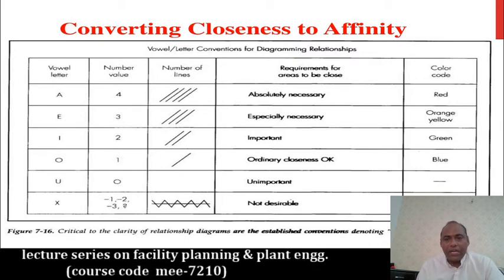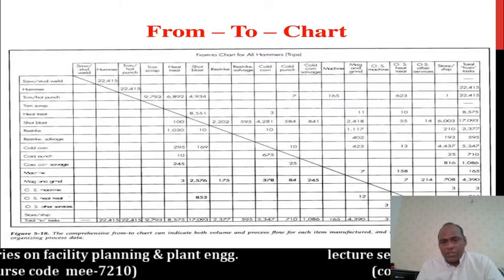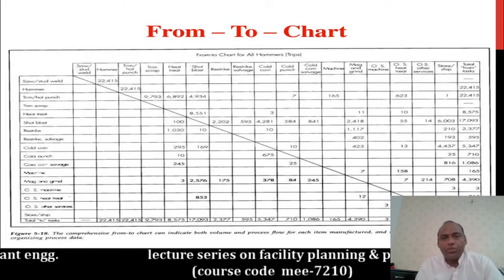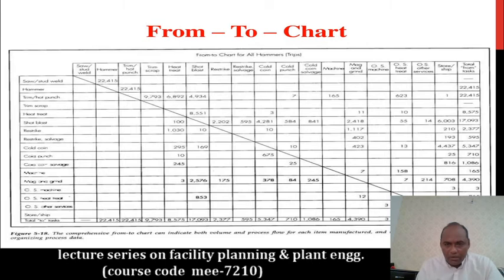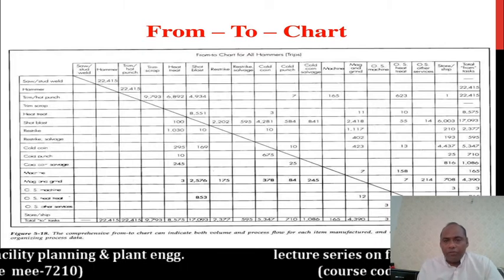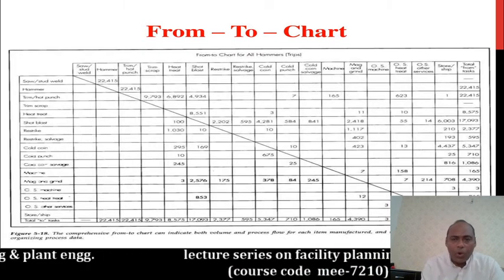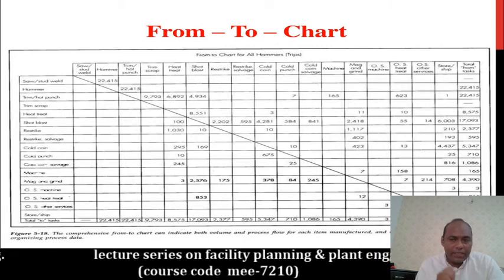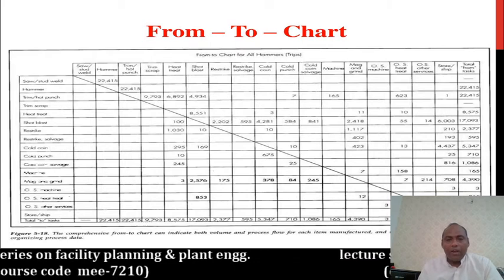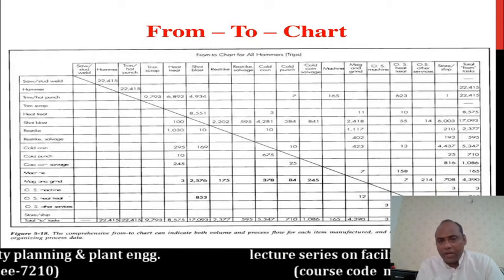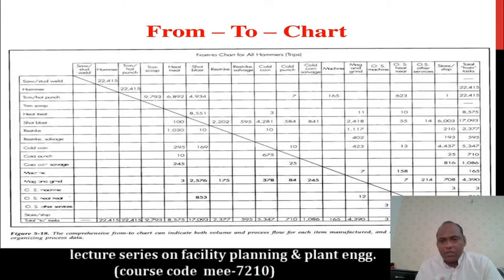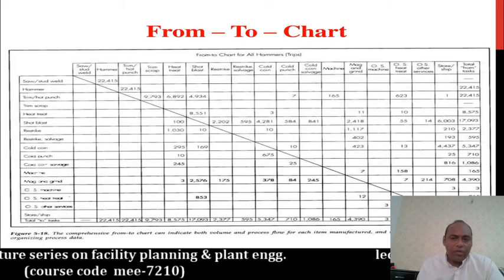The From-To Chart lists all departments in both vertical and horizontal directions. You measure the distance from one department to another and note the distance. These distances are filled in a square matrix, which has the same values horizontally and vertically. This From-To Chart is also helpful in planning.